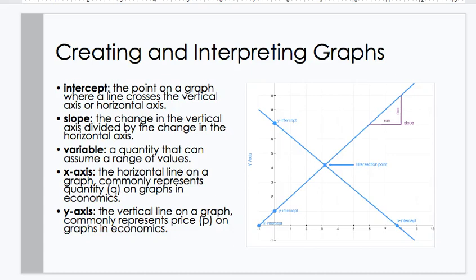Creating and interpreting graphs. Intercept: the point on a graph where a line crosses the vertical axis or horizontal axis. Slope: the change in the vertical axis divided by the change in the horizontal axis. Variable: a quantity that can assume a range of values. X-axis: the horizontal line on a graph commonly represents quantity in economics. Y-axis: the vertical line on a graph commonly representing price in economics.